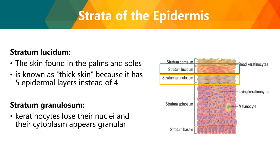The next layer is the stratum lucidum, found in the skin of palms and soles. It is known as thick skin because it has five epidermal layers instead of four. The presence of stratum lucidum helps you determine whether skin is thick or thin — if a stratum lucidum is present, the skin is considered thick.